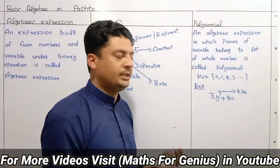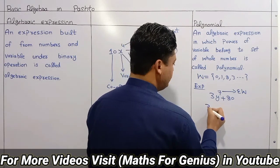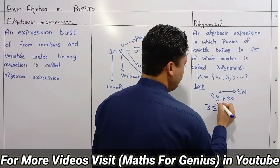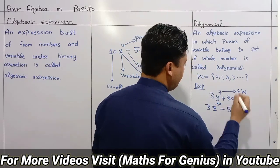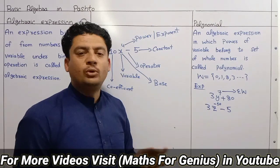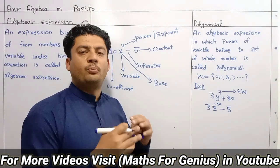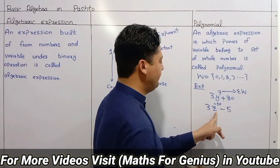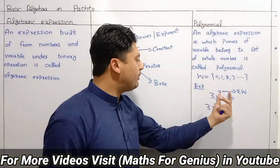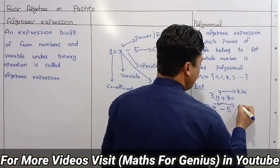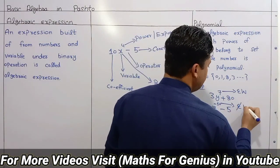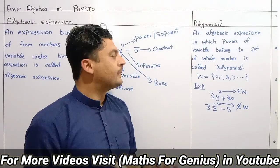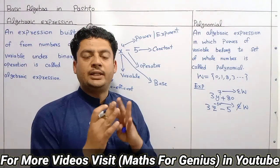The polynomial example: 3Z power minus 10. Since the exponent is negative (minus 10), the algebraic expression is not a polynomial. A polynomial requires whole number (non-negative) exponents.